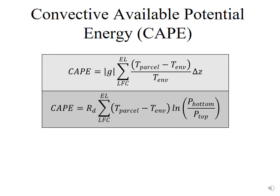The convective available potential energy is defined as gravity times the sum of the buoyancy: (T_parcel minus T_environment) divided by T_environment, times delta Z. If you wanted to do this between pressure surfaces, you can redefine CAPE as R_D — the specific gas constant for dry air — times the sum for each layer of (T_parcel minus T_environment) times the natural logarithm of the pressure at the bottom divided by the pressure at the top. For accurate results, you want delta Z or delta P to be relatively small.